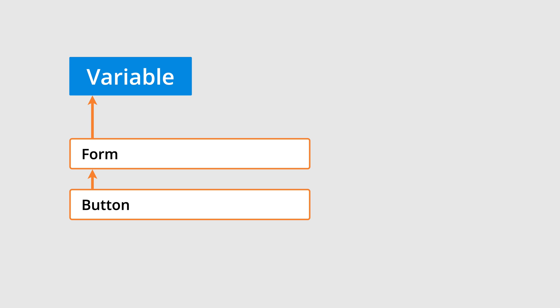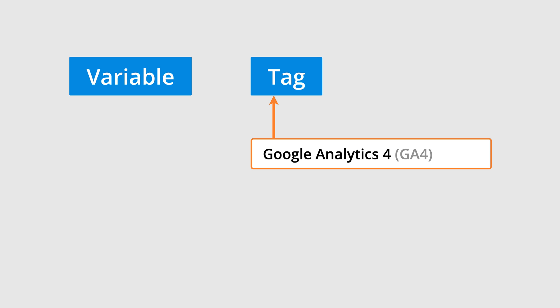A Google Tag Manager variable lets us capture information from our website. We will use a variable to access information about the button that someone has clicked. For example, we might want to track people clicking a button in a form. We can use a variable to access details about the form and the particular button they clicked. We will also create a tag, which lets us send information to the different platforms we're using. We'll be creating a Google Analytics 4 event tag and sending details about the button someone has clicked through to our Google Analytics reports.